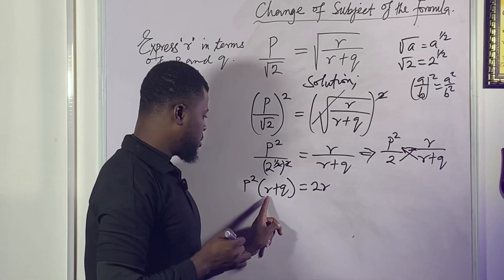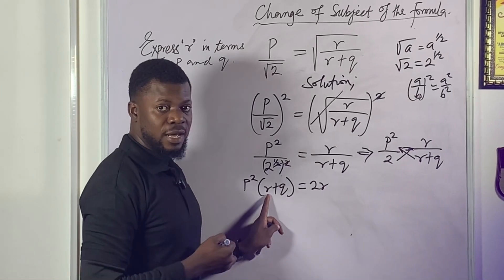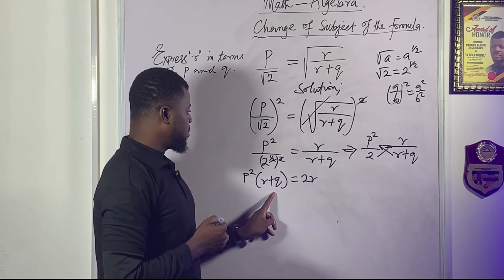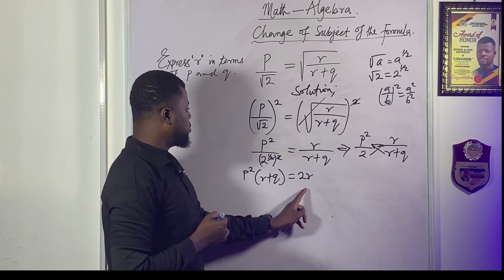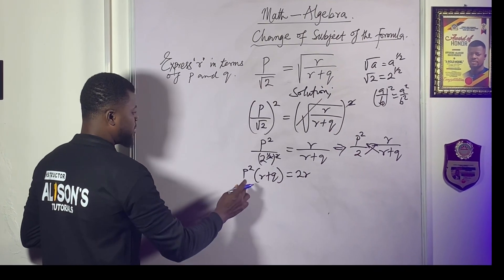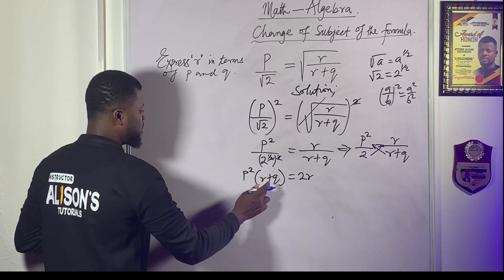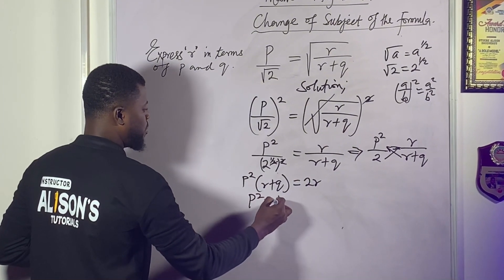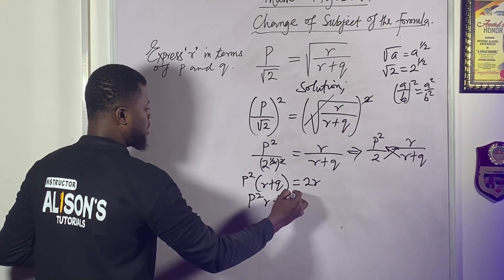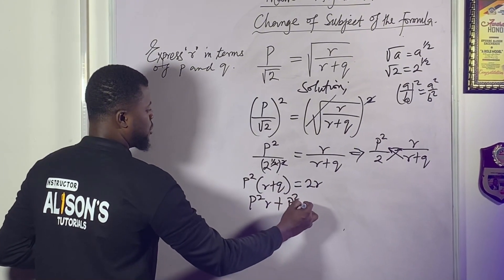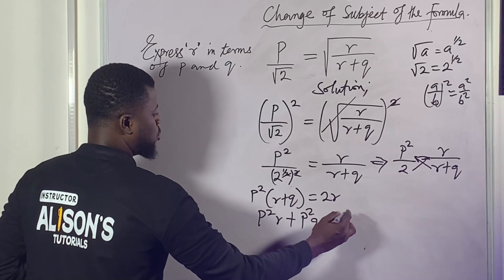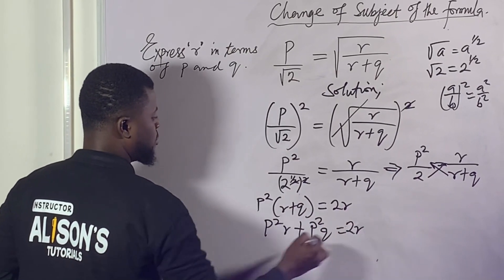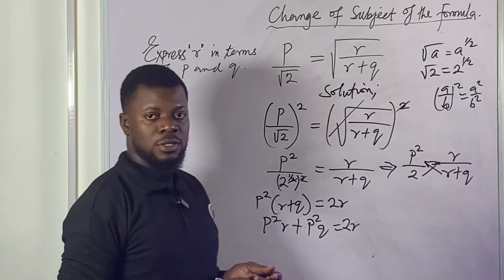Because we are looking for arrow, what we need to do is distribute. When you distribute, p squared times r gives p squared arrow, plus p squared q, equal to 2 arrow.